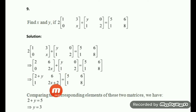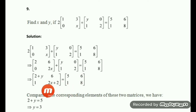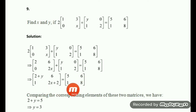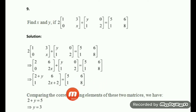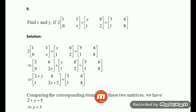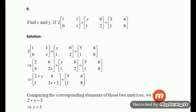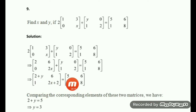Adding the corresponding elements: 2 plus Y is (2+Y), 6 plus 0 is 6, 0 plus 1 is 1, and 2X plus 2. Set equal to the right hand side as it is. Now you see both sides are comparable 2×2 matrices. Comparing corresponding elements we will have: 2X plus Y equal to 5.